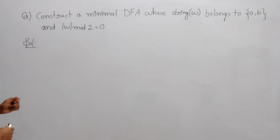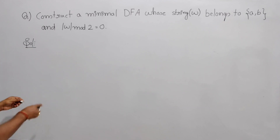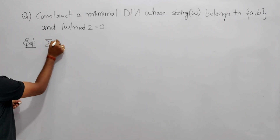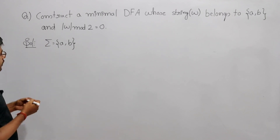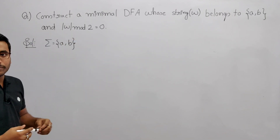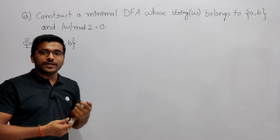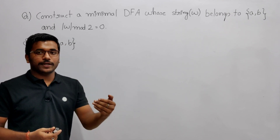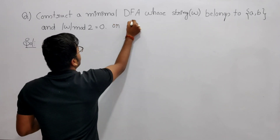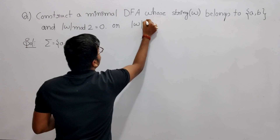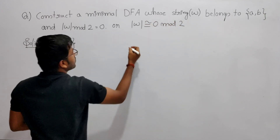Now see the question. It is saying: construct a minimal DFA whose strings belong to {a, b}, where the length of the string mod 2 equals 0 — meaning the length of the string is such that when you divide by 2 the remainder is 0. It means it should be divisible by 2. Another way of writing this is: length of string congruent to 0 mod 2.